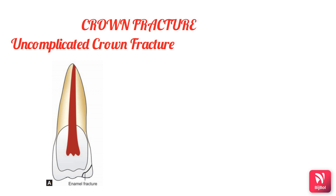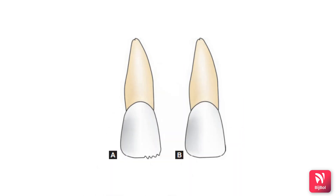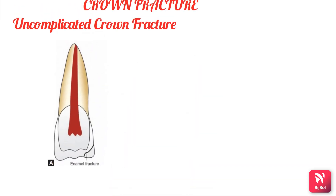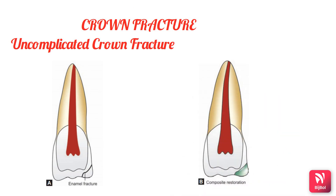The main objective of treatment for uncomplicated crown fracture is to protect the pulp by obliterating the dentinal tubules. In cases of enamel fracture, selective grinding of incisal edges is sufficient to remove sharp edges and prevent injury to the lips or tongue. For aesthetic reasons, composite restoration can be done.